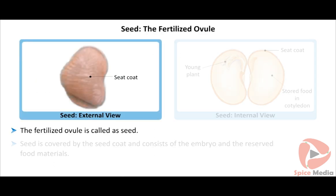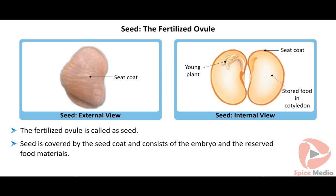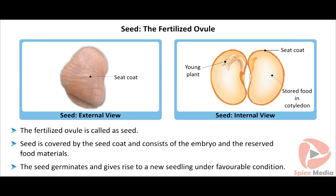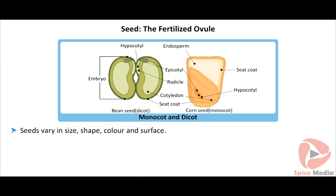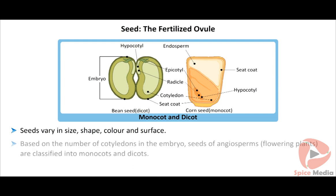The fertilized ovule is called a seed. It is covered by the seed coat and consists of the embryo and reserved food materials. The seed germinates and gives rise to a new seedling under favorable conditions. Seeds vary in size, shape, color, and surface. Based on the number of cotyledons in the embryo, seeds of angiosperms are classified into monocots and dicots.